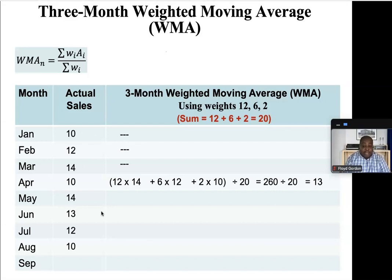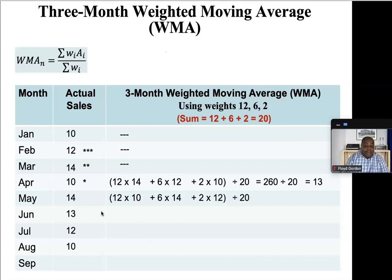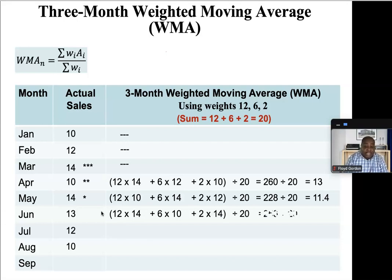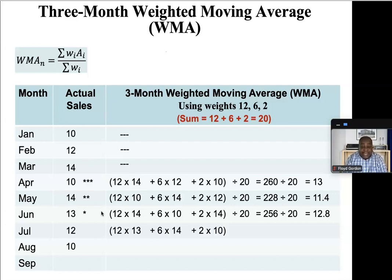Moving on to May: highest weight 12 multiplied by 10, second highest weight 6 multiplied by 14, third highest weight 2 multiplied by 12, divided by 20 — gives a forecast of 11.4 for May. Moving on to June: highest weight 12 multiplied by 14, plus second highest weight 6 multiplied by 10, plus third highest weight 2 multiplied by 14, divided by 20 — that gives 12.8 as a forecast for June. Moving on to July: 12 times 13, plus 6 times 14, plus 2 times 10 — gives a forecast of 13 for July.